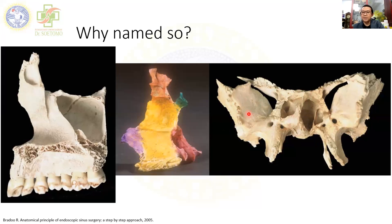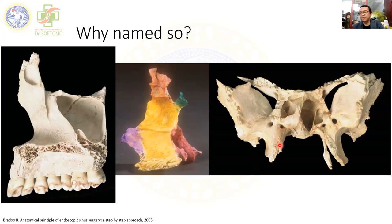The last bone is the sphenoidal bone, which has the body, planum sphenoidale, lesser wing, and greater wing. There is a medial and lateral pterygoid process of the sphenoidal bone. At the base of the pterygoid process we find foramen rotundum and, medial-inferiorly, the vidian canal. There is also a smaller canal called the palatovaginal canal, medial to the medial pterygoid process. The PPF is situated around this area.